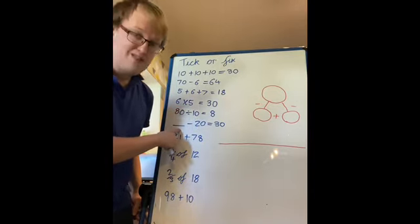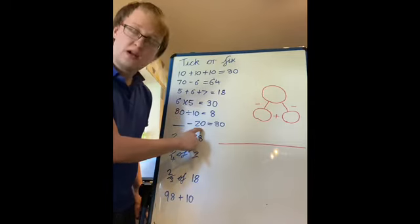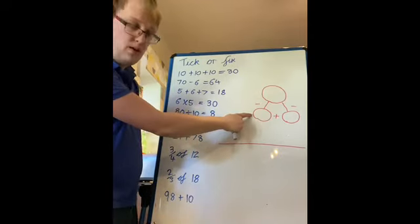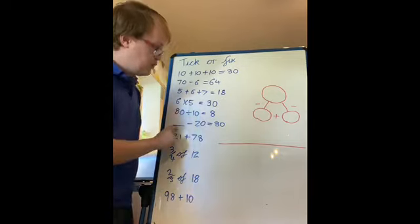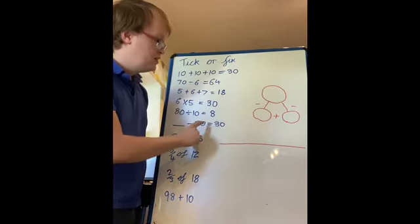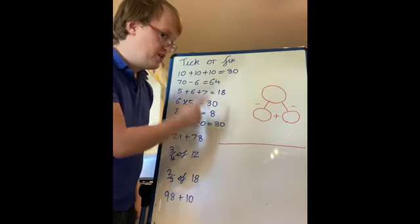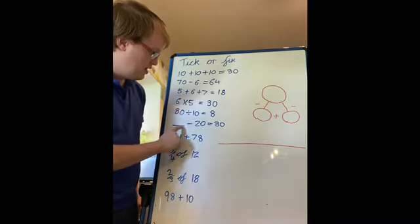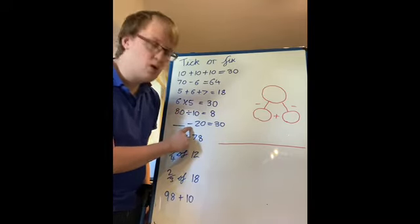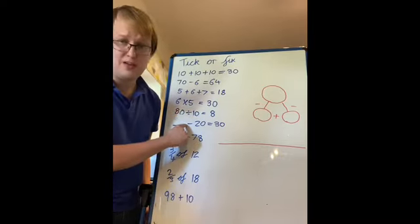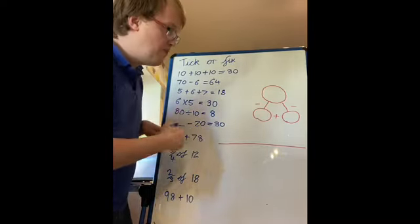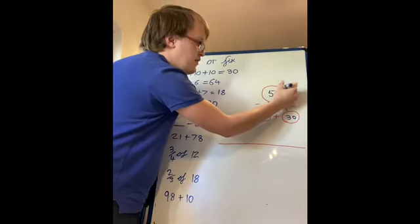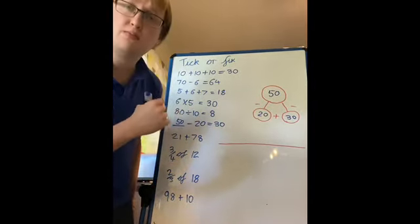Next question is another missing number question. What's our missing number? I'm going to use the part-part-whole diagram to help me. Which number am I going to put in the whole? Remember, we always put our biggest number in the whole. So if we're starting with this number and then getting smaller, because takeaway makes numbers smaller, we know that this has got to be our whole. So 20 and 30 are parts. 20 and 30, 20 ahead, not 10, turns 40, 50. So the answer was 50. How did you get on with that one? Are you finding these missing number problems a bit easier now you're practicing a bit more?